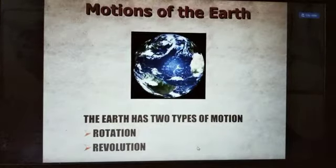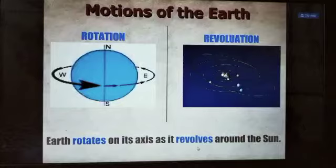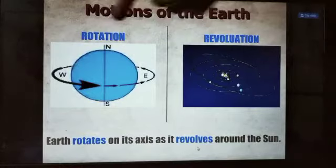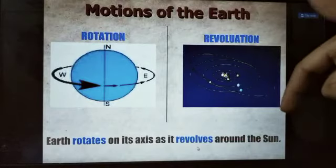We know that Earth has two types of motions: rotation and revolution. What is rotation and what is revolution? Rotation is always around its own axis. Revolution is always around the sun.